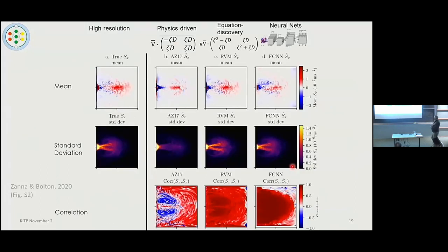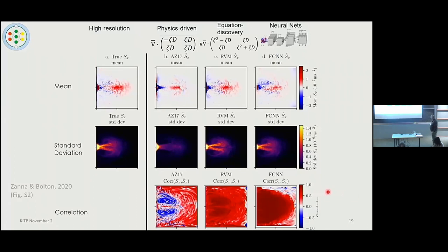This is again comparing theory-driven, equation-discovery, and CNN parameterizations against high-resolution results. The equation discovery is doing a good job in terms of spatial coverage, but the CNN is performing better over much of the ocean — there's deeper red skill scores in the bottom right. There's less white or blue in the equation discovery, suggesting better coverage, but the CNN has higher peak skill. It's not clear to me yet that equation discovery always does as well — the question is whether it does well enough.